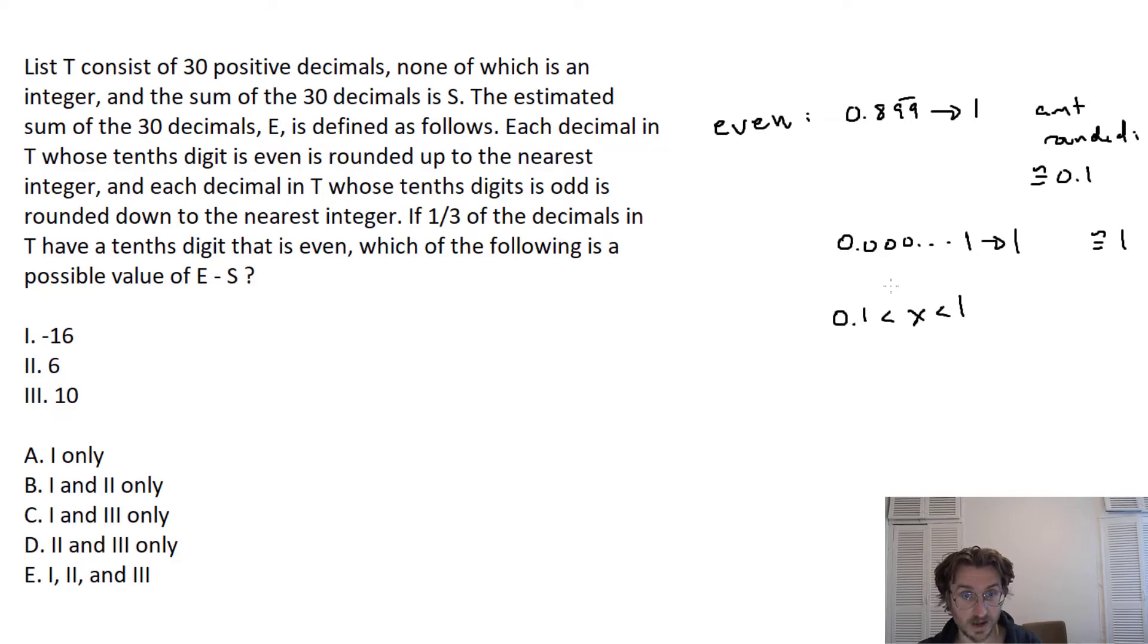Next question, how many evens do we have? They're saying it's 30 positive decimals, and that's going to give us 10. So basically, I just multiply this by 10. So the total amount rounded for evens is going to be 0.1 times 10, all the way up to 10.